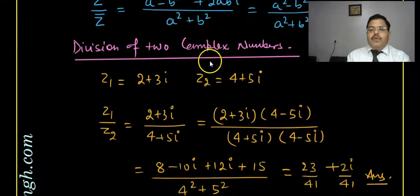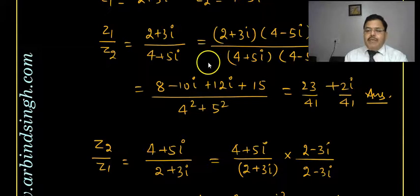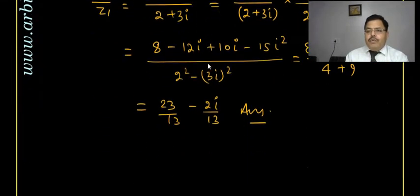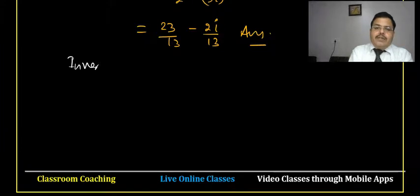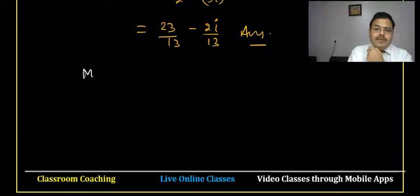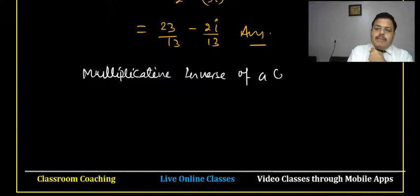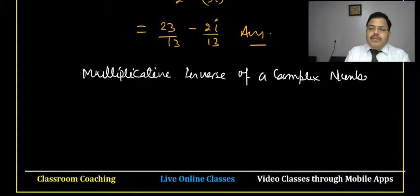How to divide two complex numbers: wherever there is a complex number in the denominator with an imaginary number, we multiply by its conjugate — in the numerator as well as in the denominator. Now there is another term: multiplicative inverse of a complex number.